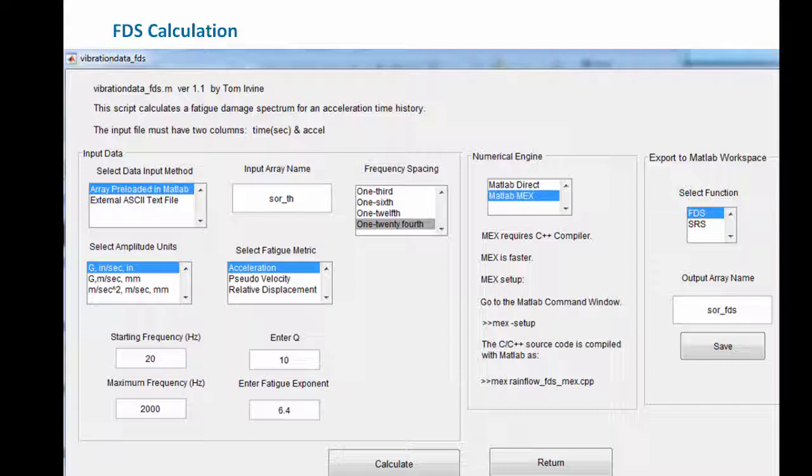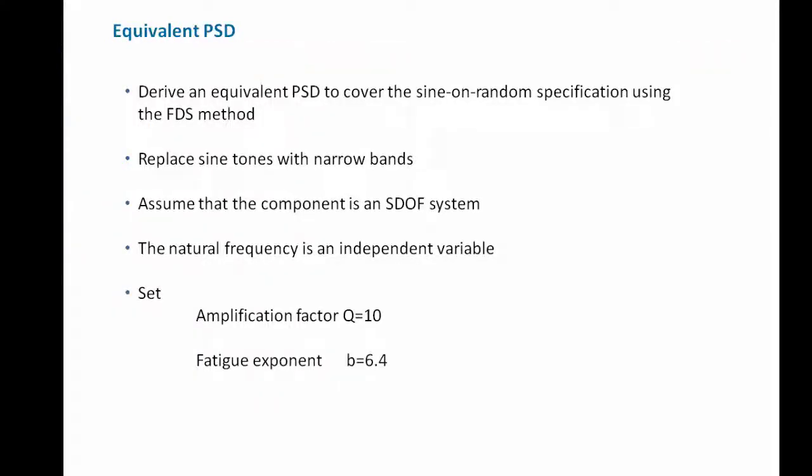Next, we derive an equivalent PSD to cover the sine-on-random specification. The primary justification will be the FDS method, supplemented by the SRS. Our approach replaces the sine tones with narrow bands, creating a narrow-band-against-broadband random composite PSD. We assume the component is a spring-mass SDOF system, with natural frequency as an independent variable, Q = 10, and fatigue exponent b = 6.4.